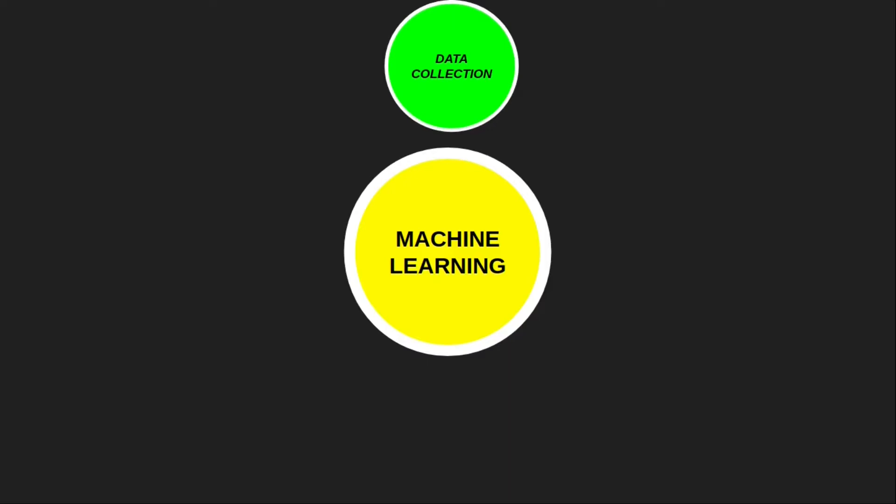What is data collection and what do we do in data collection? The main goal, the ultimate aim of data collection, is to identify the data sources that we need to understand the problem, to train the model, and to obtain all data related to the problem. This is the first step in the machine learning project development life cycle. In this step, we collect data from various sources.